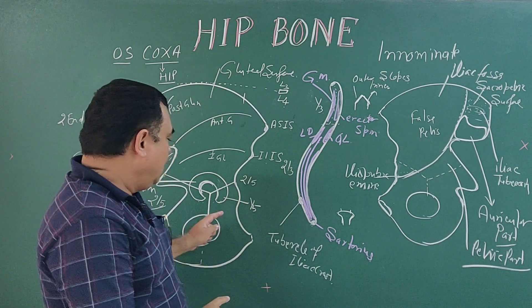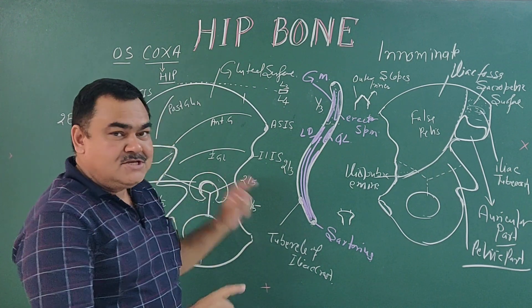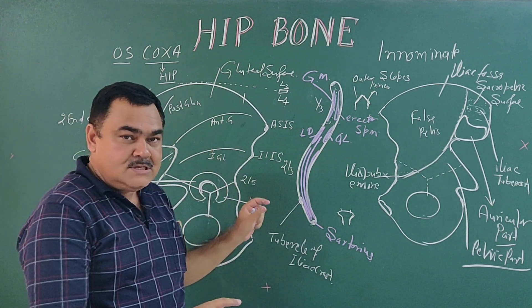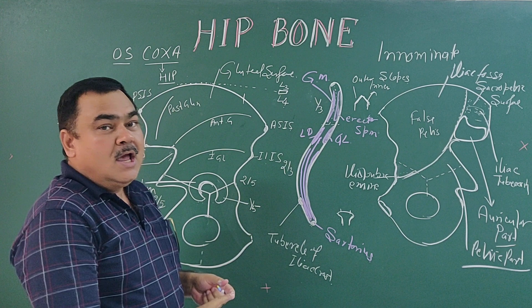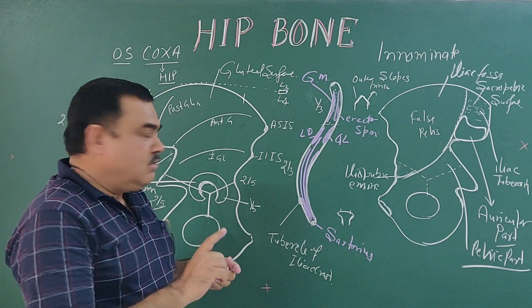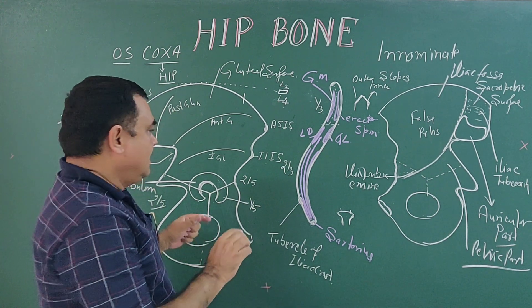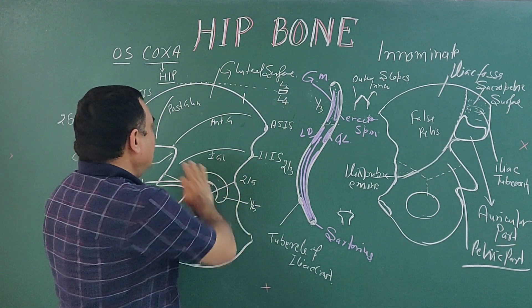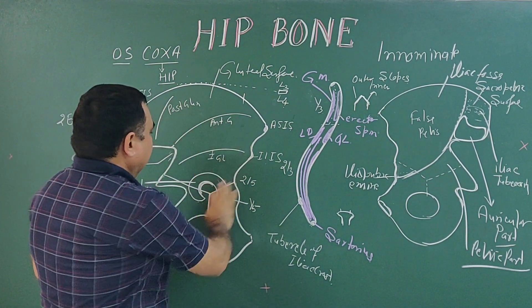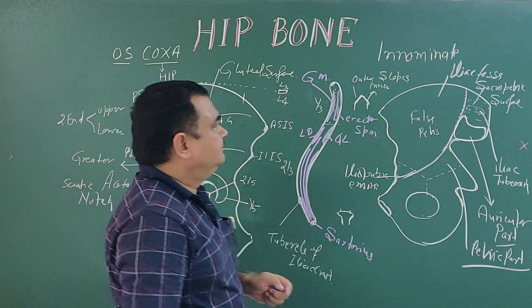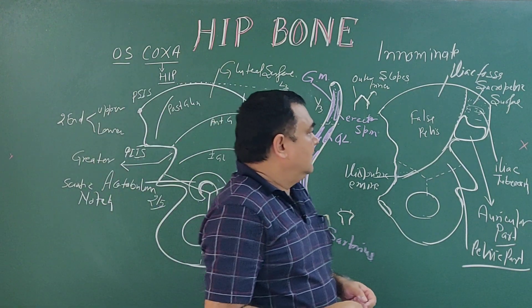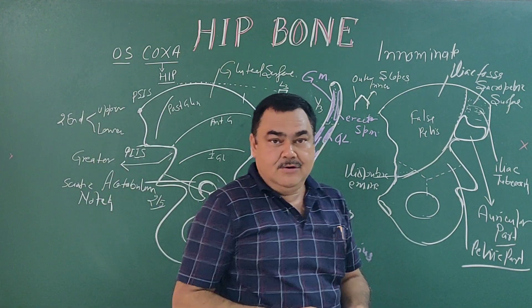So this is all about the ilium. Three bones — ilium, ischium, and pubis — join together to form the hip bone. We have now discussed the ilium in detail. Thank you.